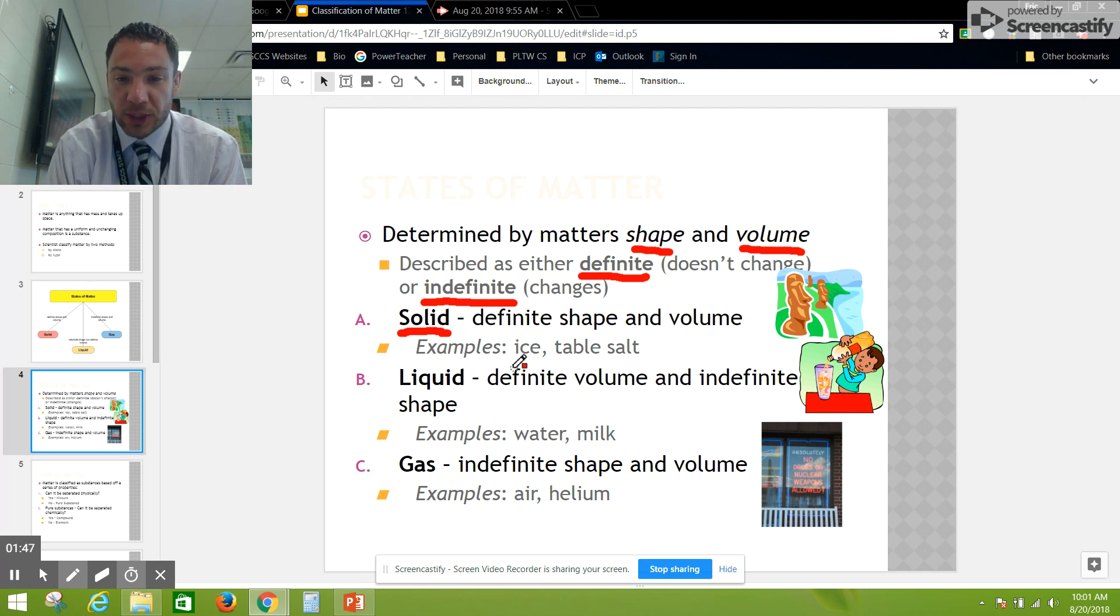Liquids, on the other hand, have definite volume but indefinite shape. Their volume doesn't change, but their shape can change very easily. They take the shape usually of their container. Things like water and milk, these are liquids.